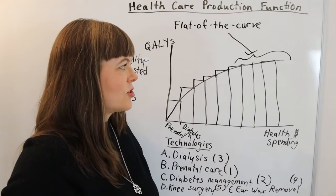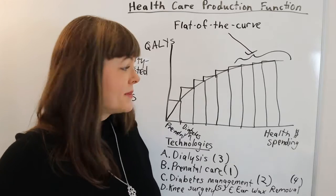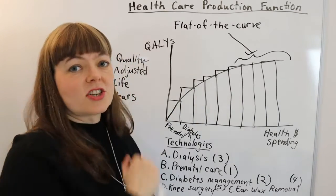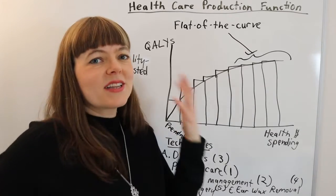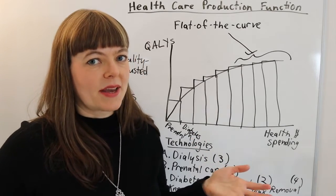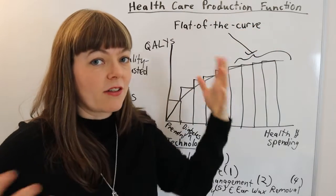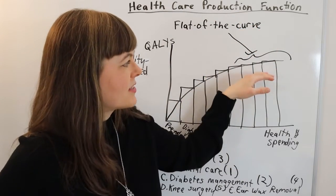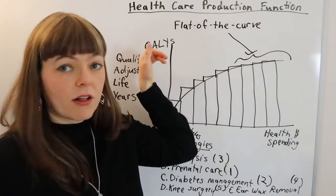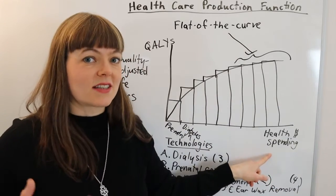That system is going to be super expensive, super high on healthcare spending, but perhaps it may not get very good results when it comes to quality adjusted life years. That's really the conversation happening when we talk about flat of the curve in economics. The curve in reference is the healthcare production function, and the flat of the curve is the part where we're not really adding much to health, but we're adding a whole lot to the financials in the system.